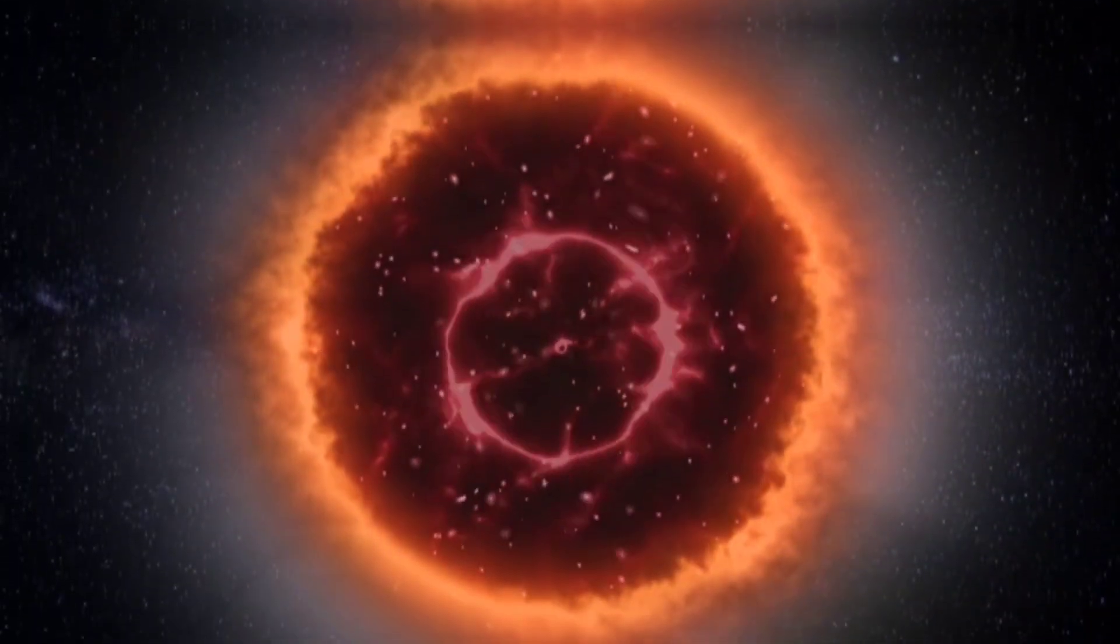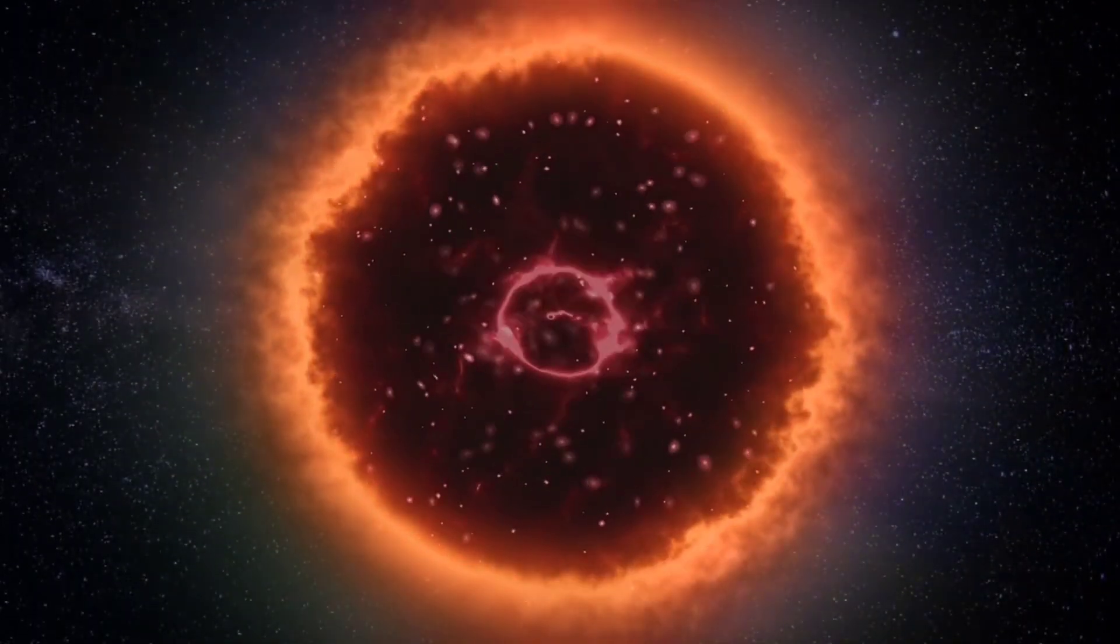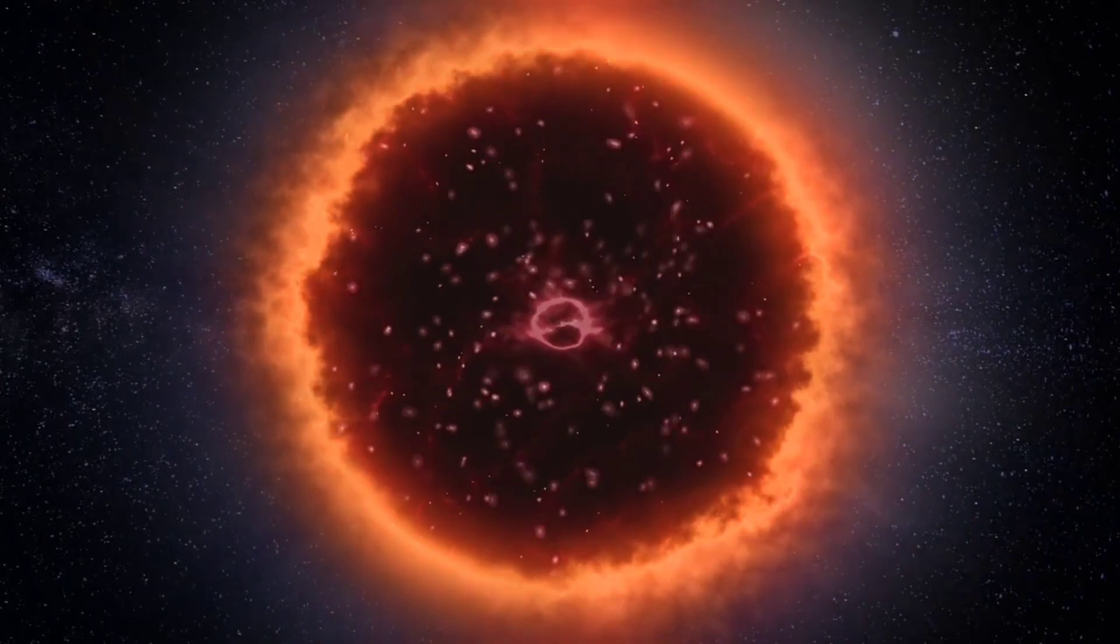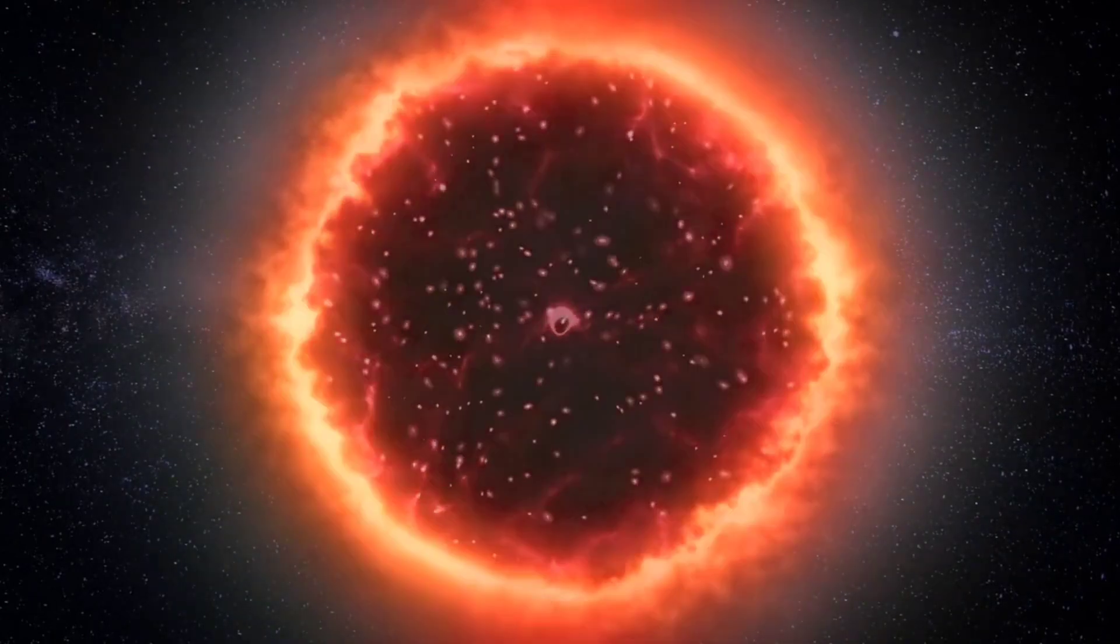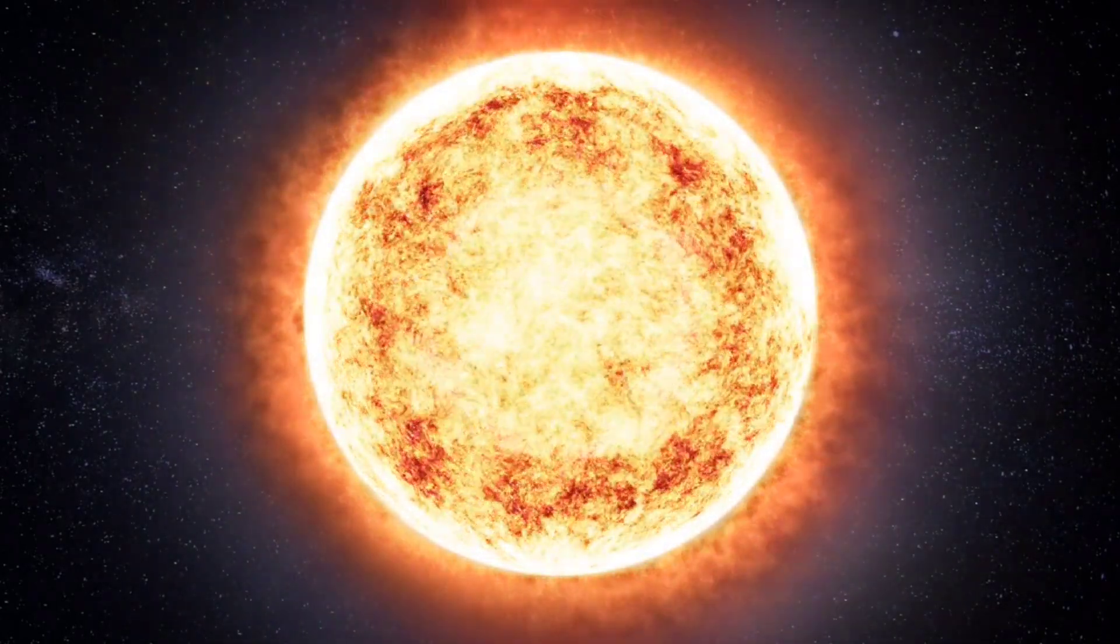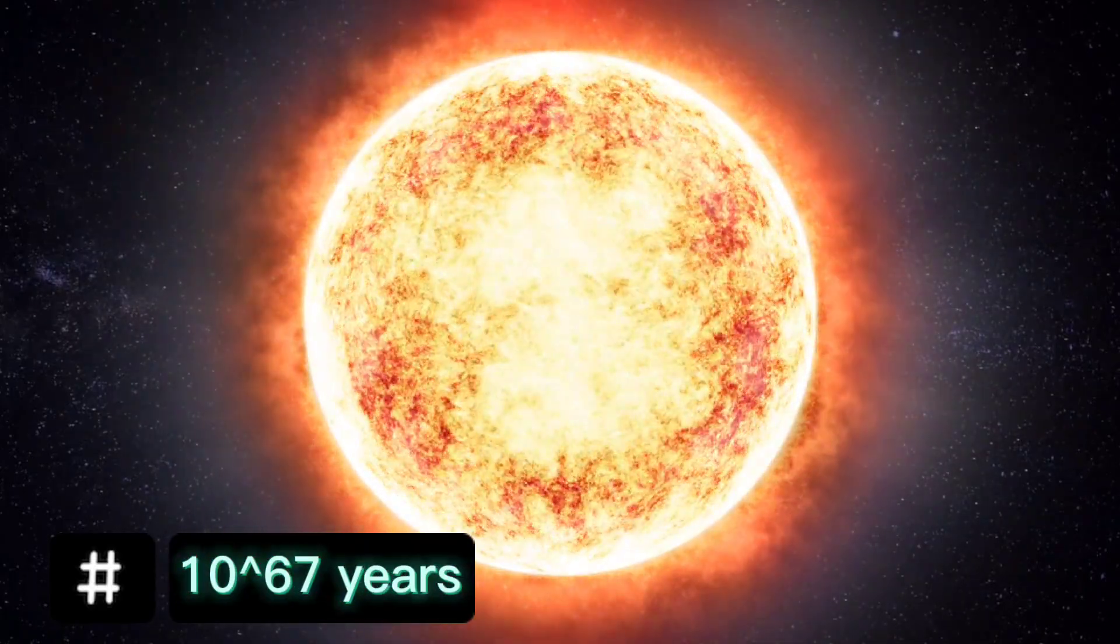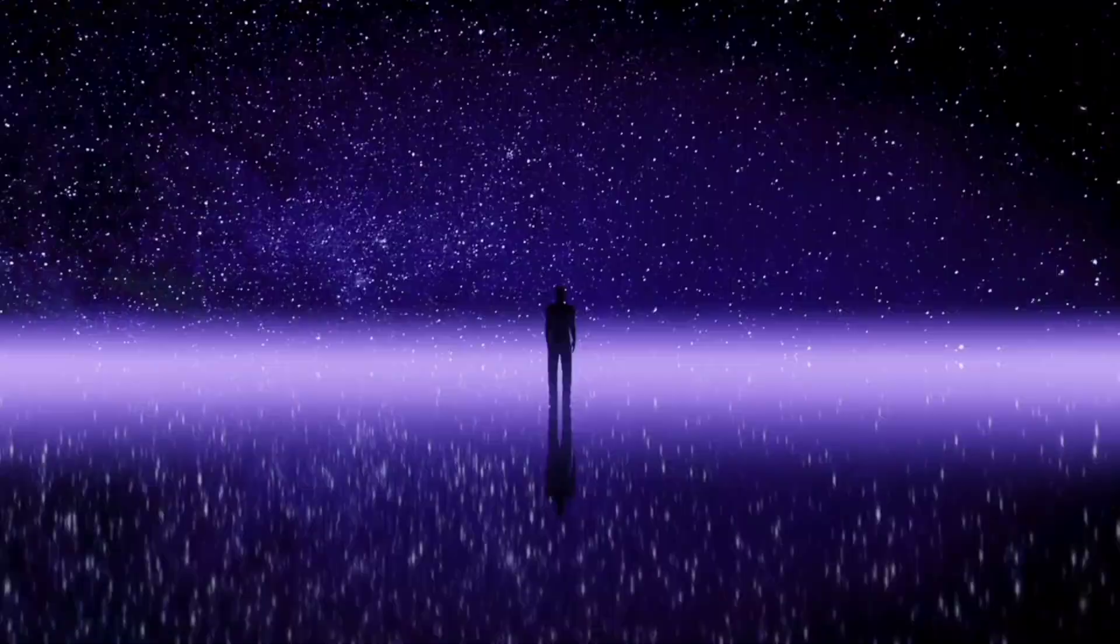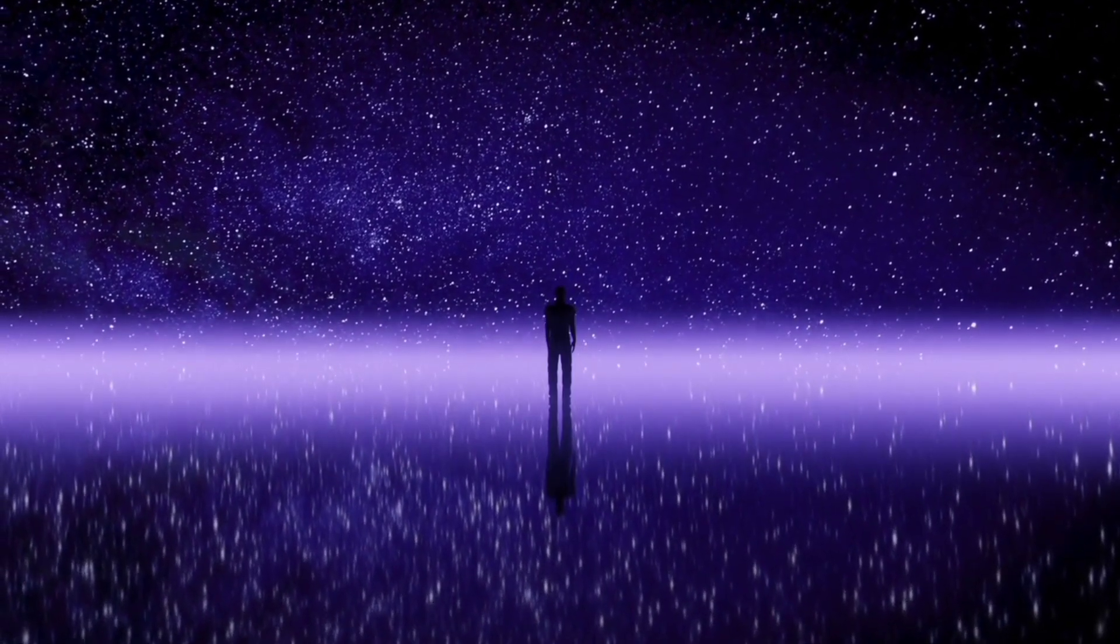This phenomenon occurs over an immense time scale, with smaller black holes radiating more intensely than larger ones. For example, a black hole with the mass of our sun would take around 10^67 years to evaporate completely, a time vastly exceeding the current age of the universe.